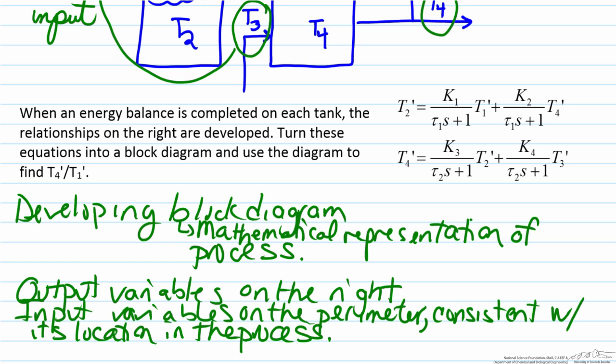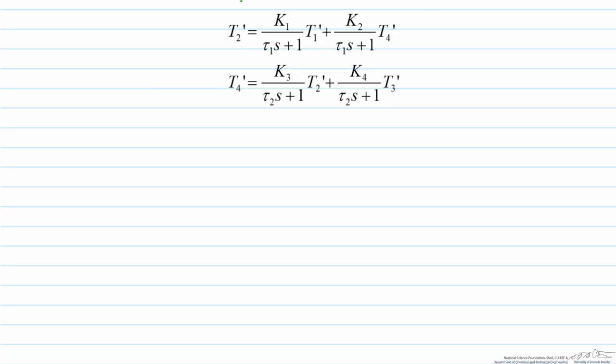If it's a variable which comes in part way through the process it will probably come in somewhere in the middle of the diagram. It will come in from either the top or the bottom. So to show this let's look at our equations we have here.